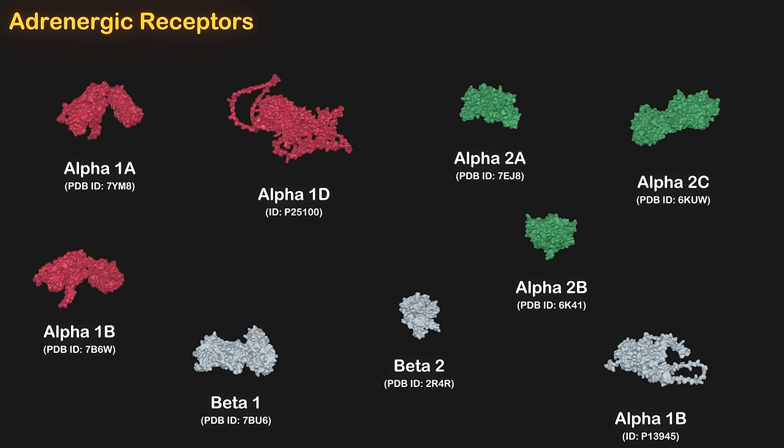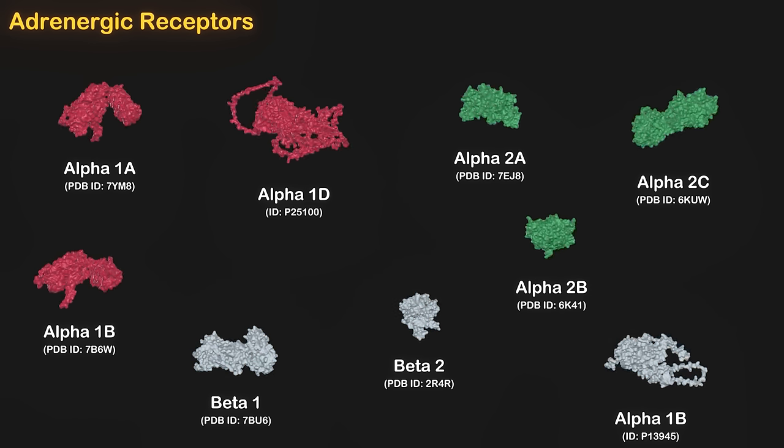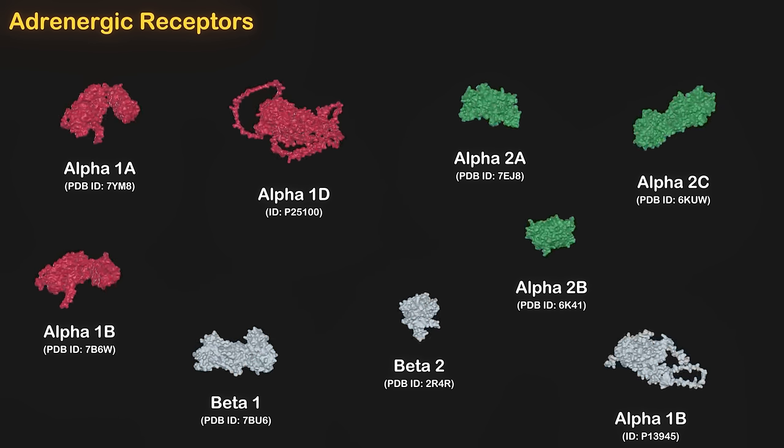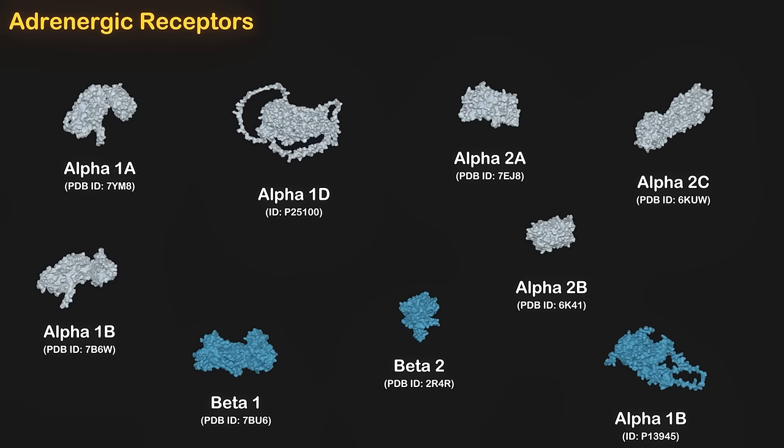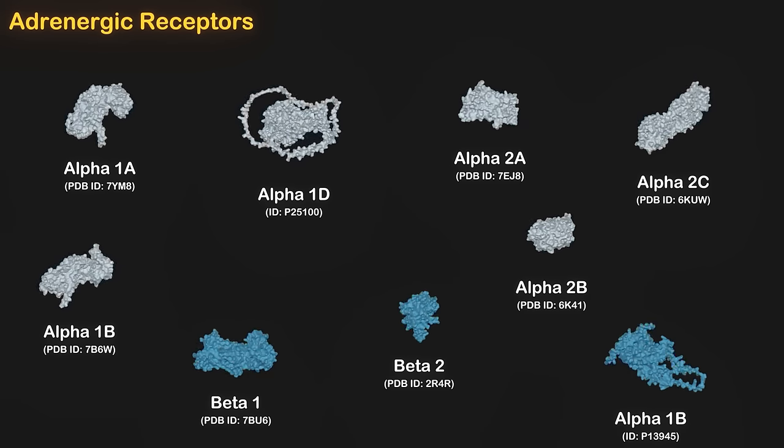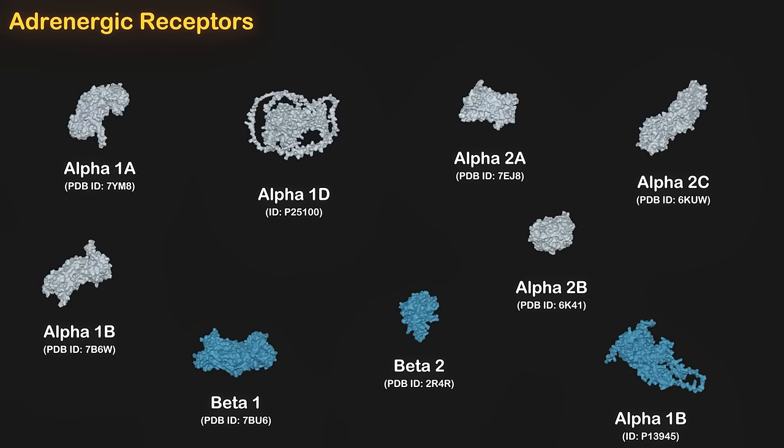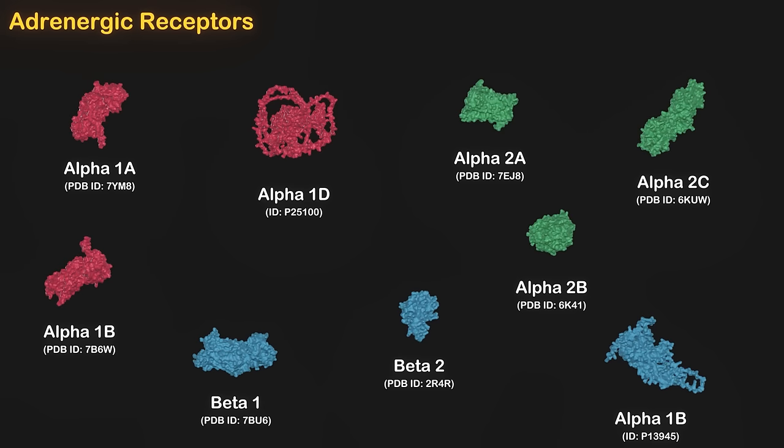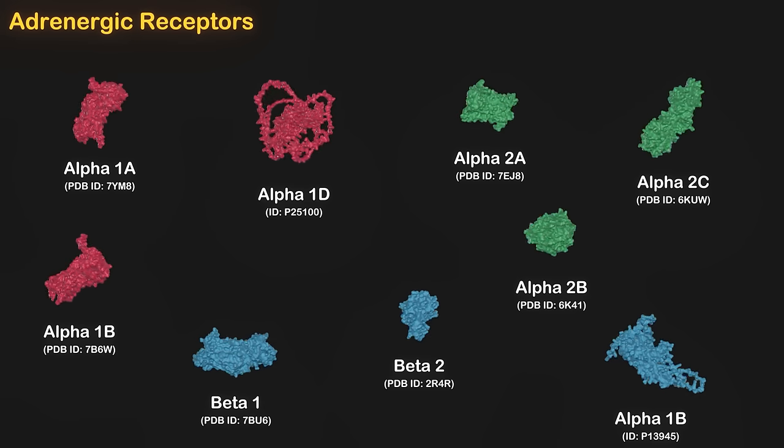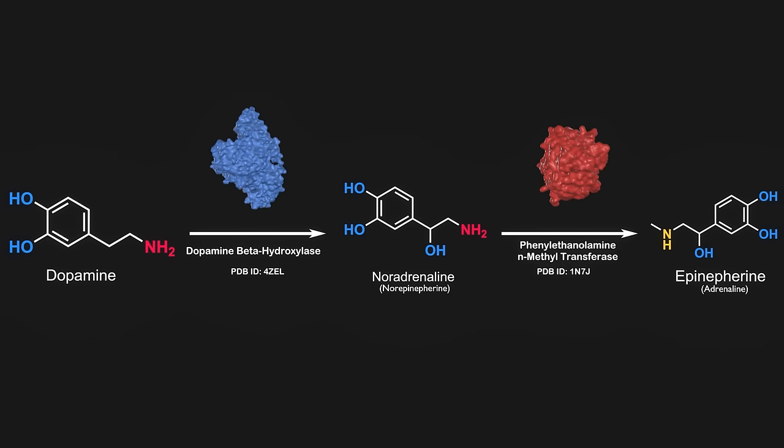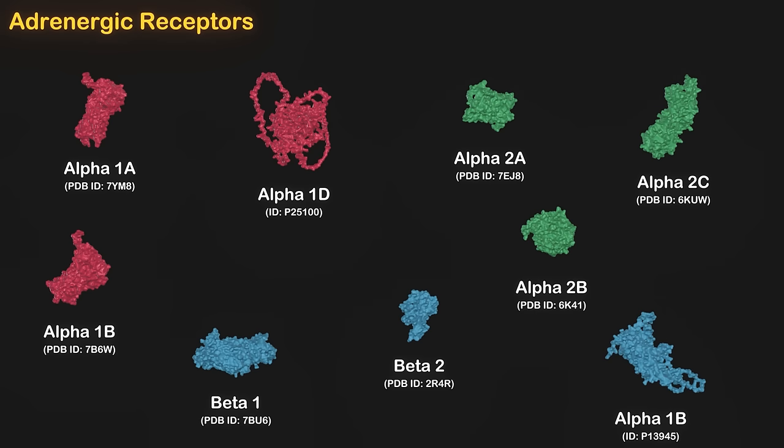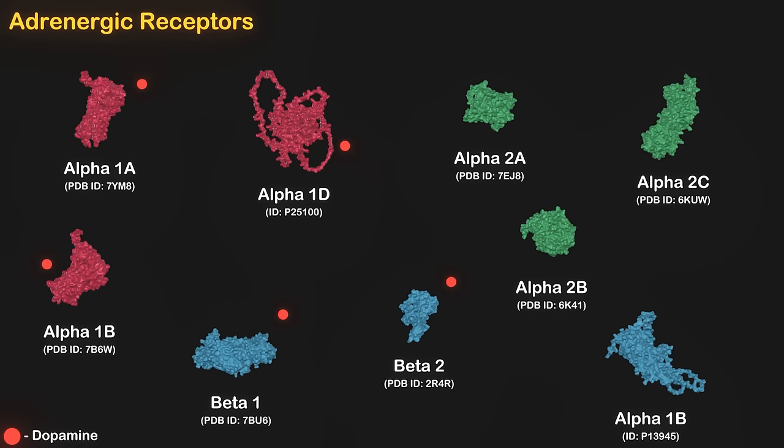Activation of alpha-adrenergic receptors typically leads to blood vessel constriction and a rise in blood pressure. Conversely, when beta-adrenergic receptors are stimulated, they promote an increased heart rate and a release of energy from stored glucose. It's important to note that adrenergic receptors can also interact with other neurotransmitters. Earlier I mentioned that dopamine is a biochemical precursor to noradrenaline, and it's interesting to note that dopamine can also bind to certain adrenergic receptors, causing various effects.